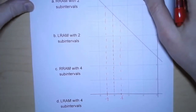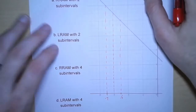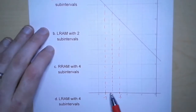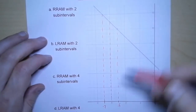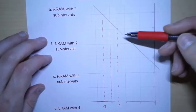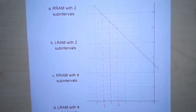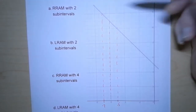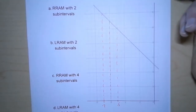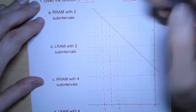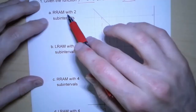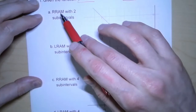It gets us pretty close. Now these two strips have in common that they have a width of 1. But what's different about them is their height, because it's not flat at the top. So how do we figure out the area of these strips? That's where RRAM and LRAM come into play. This is shorthand for right rectangular approximation method — basically, we take each strip and use the right-hand side as the height.